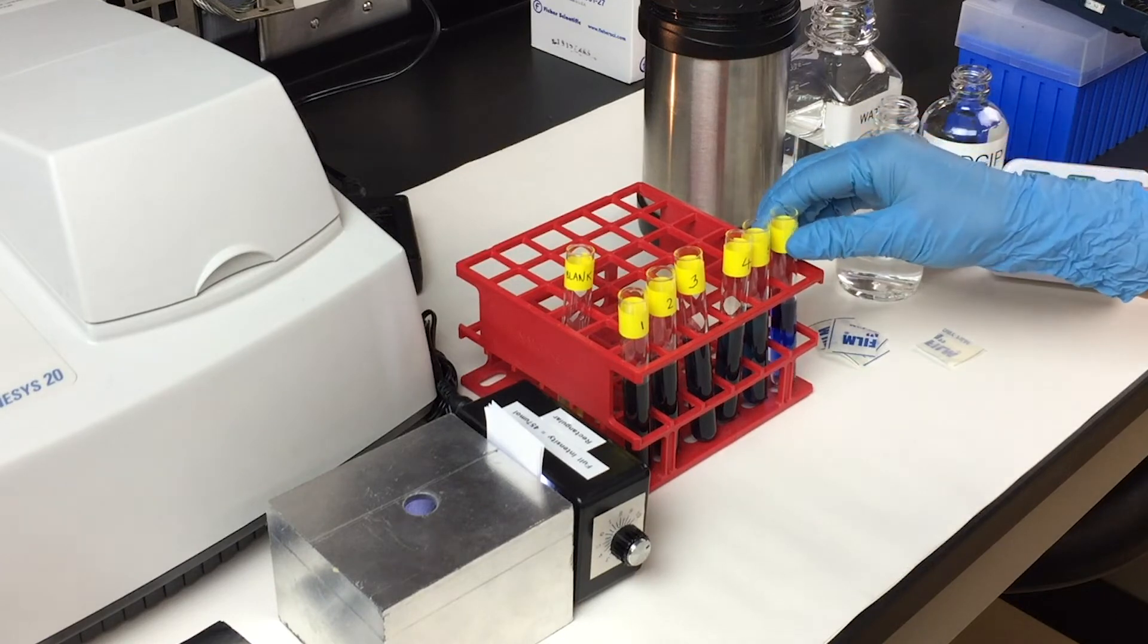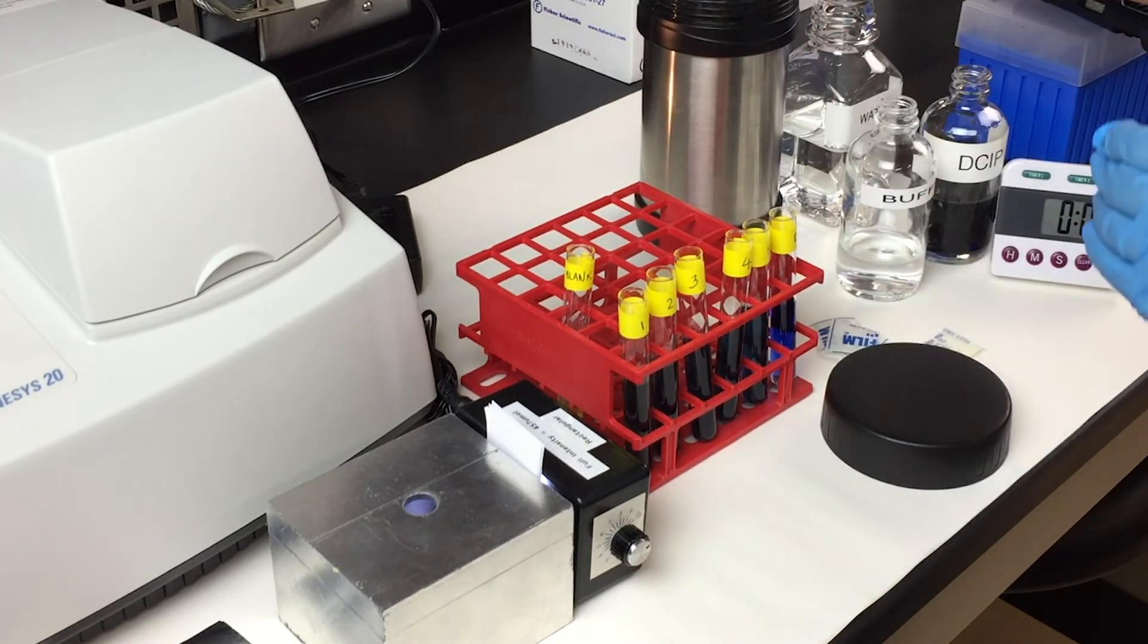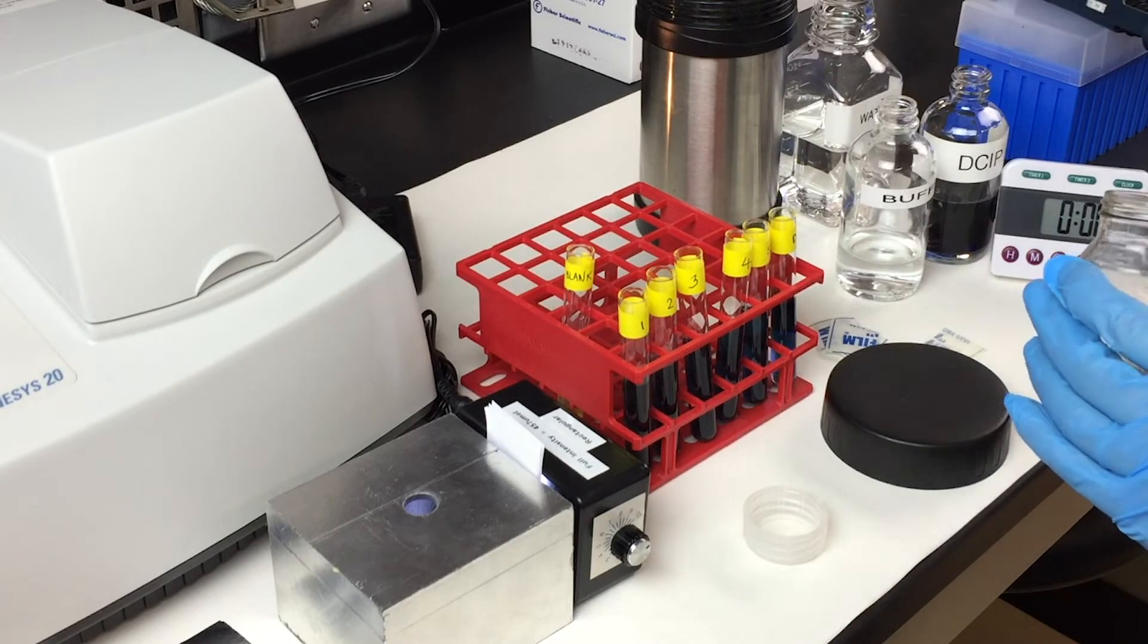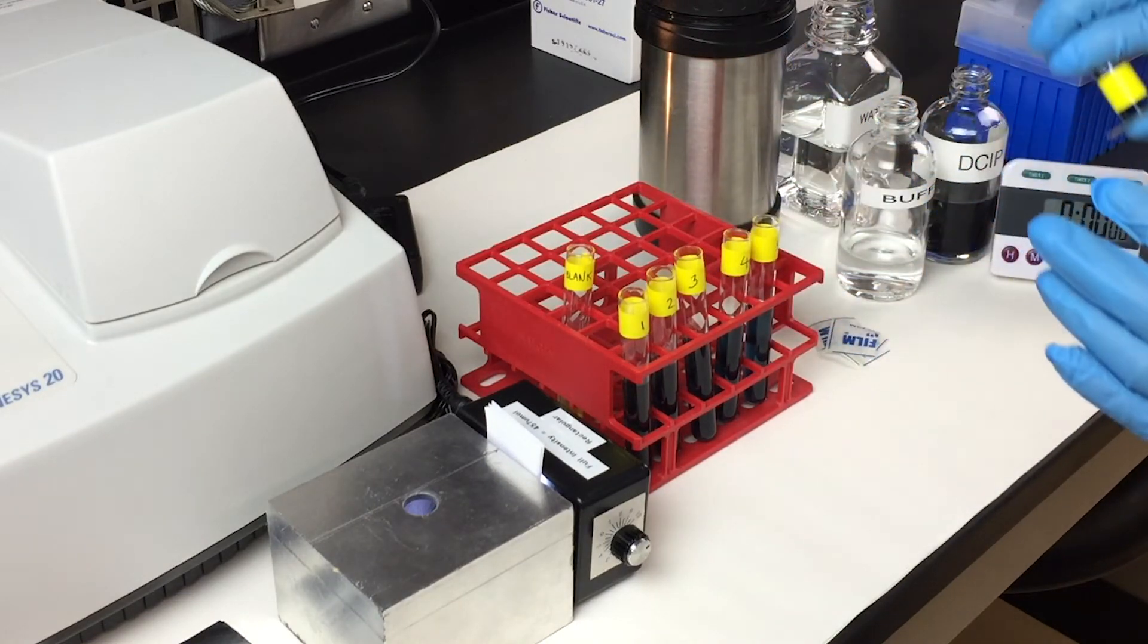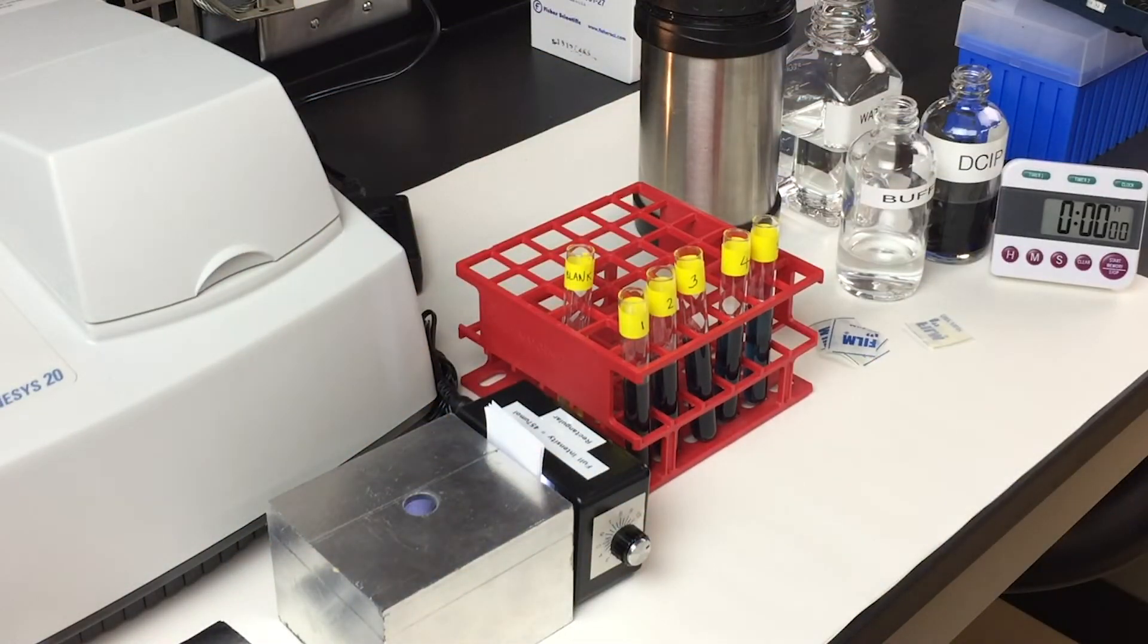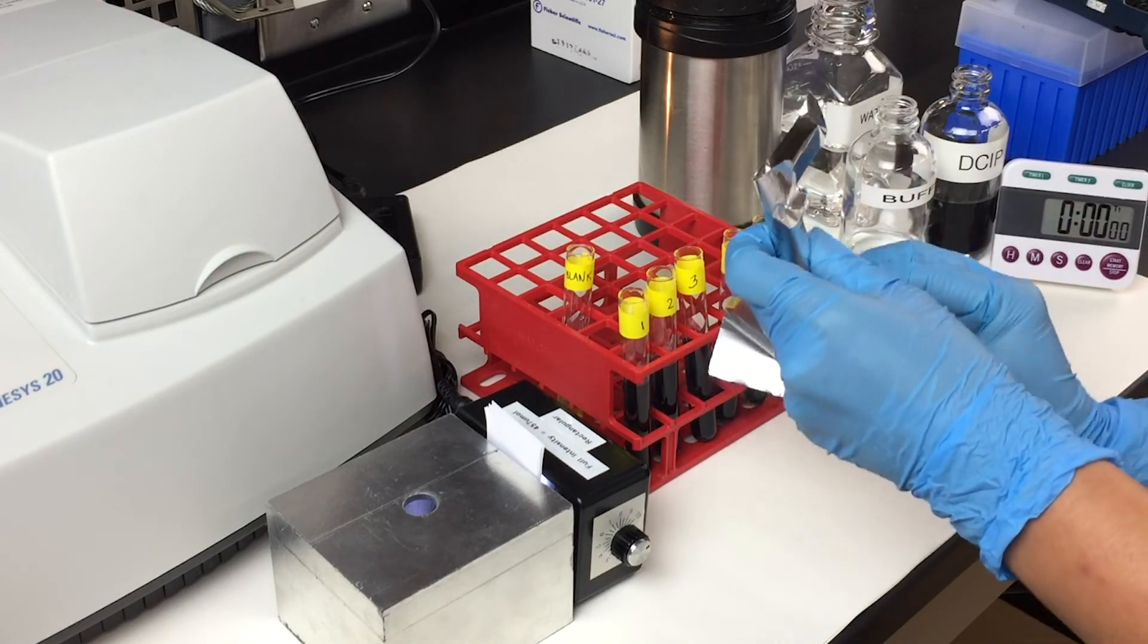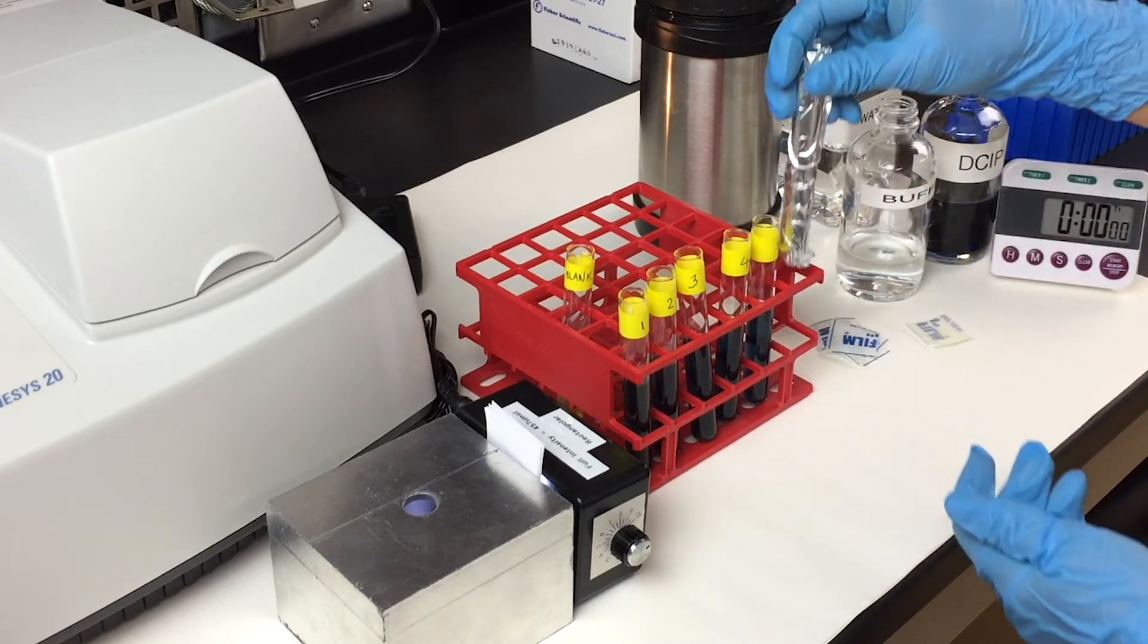For the dark sample, you don't need to illuminate that under the light. After the addition of 0.25 ml of thylakoid solution, do the initial OD reading in the spectrophotometer, record it in your lab manual, and wrap your sample in aluminum foil.